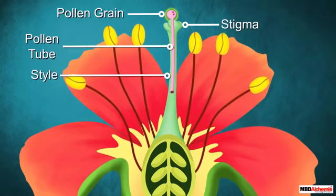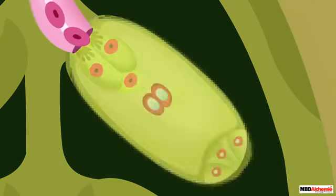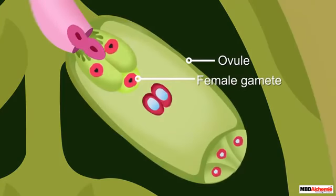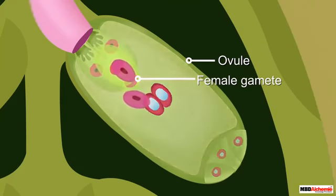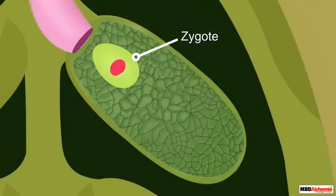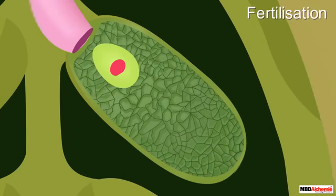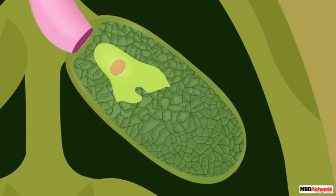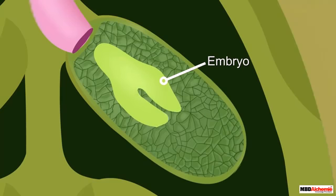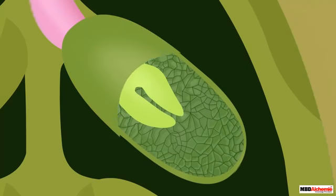This tube travels through the style and reaches the ovary. The male gamete from the pollen travels in this tube and reaches the female gamete present in the ovule of the ovary. After that, the male and the female gamete fuse together to form the zygote. This process of fusion of male and female gametes is called fertilization. The zygote formed after fertilization then divides several times to form an embryo inside the ovule.